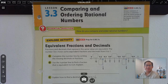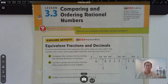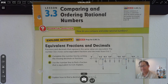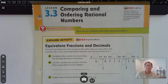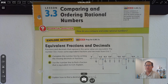Good morning, everybody. So in today's lesson, lesson 3.3, we're going to be working on comparing and ordering rational numbers. We're on page 59 of the 6th grade GoMath textbook, and basically the essential question that you should be able to answer and explain is: how do you compare and order rational numbers?